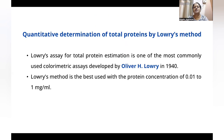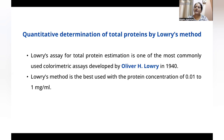Quantitative determination of total protein by Lowry's method is one of the most commonly used colorimetric assays, developed by Oliver Lowry in 1940. This is the best method where we can estimate the total protein concentration from 0.01 to 1 mg per ml.